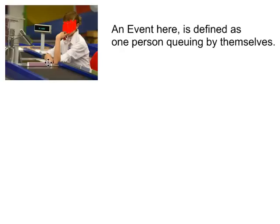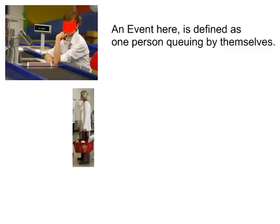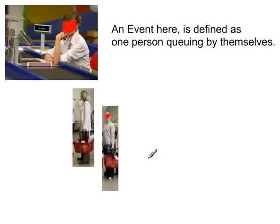An event here is defined as one person queuing by themselves. So long as people arrive randomly to the checkout, independently of each other, and at a constant average rate — say, one customer arrives every two minutes to this particular checkout — then a Poisson model may be suitable to model the number of customers queued at this checkout.